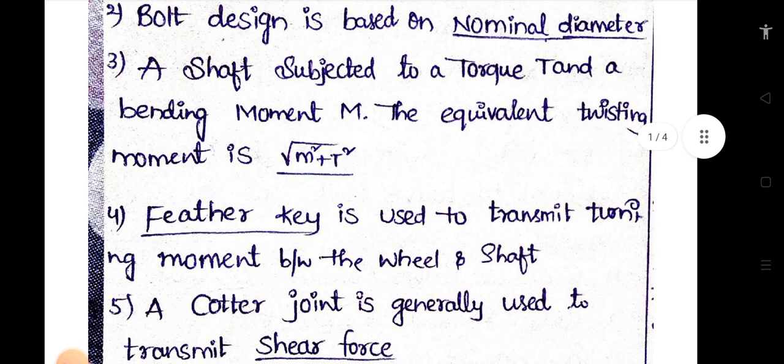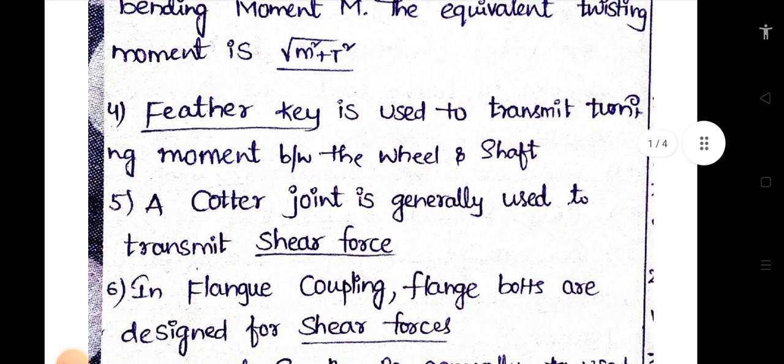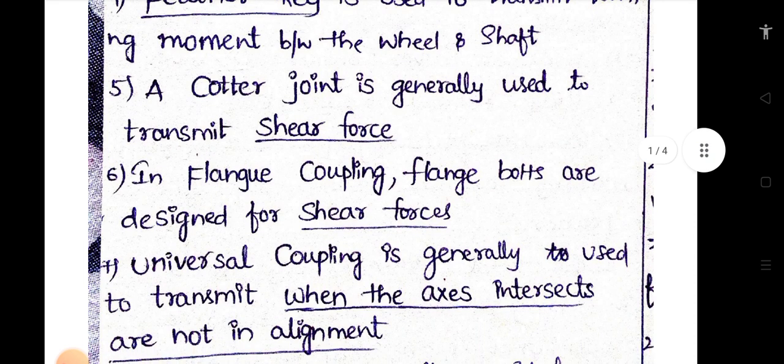Feather key is used to transmit turning moment between the wheel and shaft. A cotter joint is generally used to transmit the shear force. In flange coupling, flange bolts are designed for shear forces.